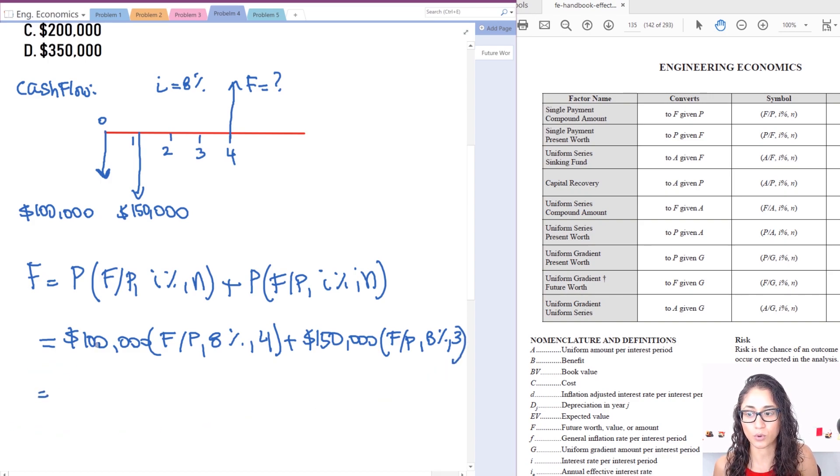So now the only thing we have left is go to the tables for the 8 percent interest, look for the n=4 and n=3, and just substitute this equation with those values on the table. So let's go to the tables.